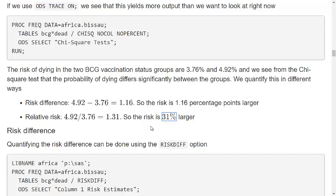A risk difference of 1.1 percentage point may appear to be small to some people and a relative risk of 31% may appear to be large to some people, but it is exactly the same difference.